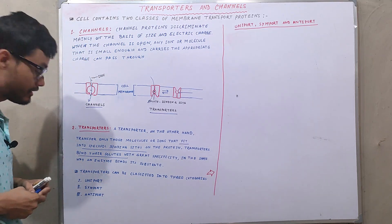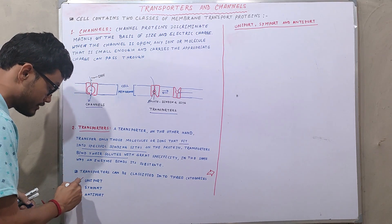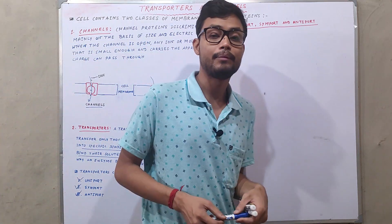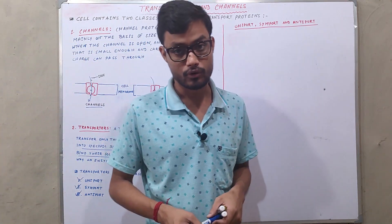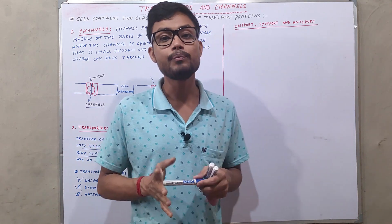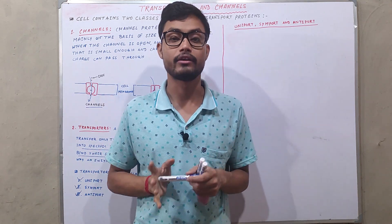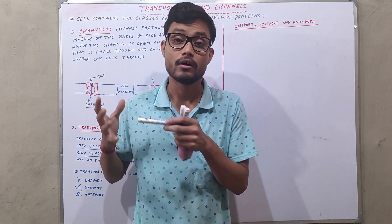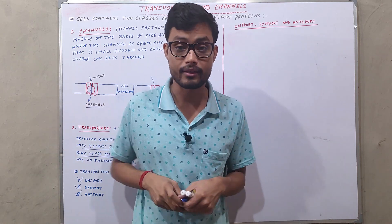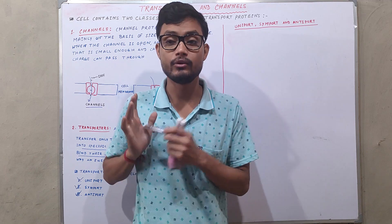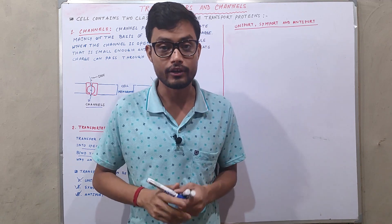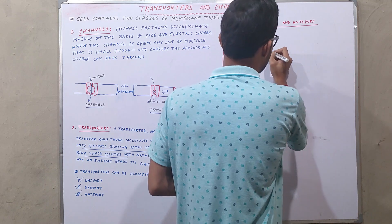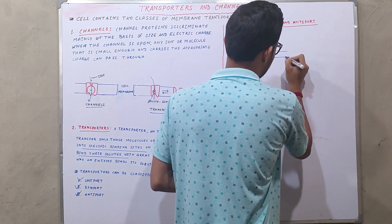Transporters are classified into three major categories: uniport, symport, and antiport. Uniport is a transporter molecule in which molecules pass through the cell membrane from one side to another side, and in uniport only a single type of molecule can pass through.